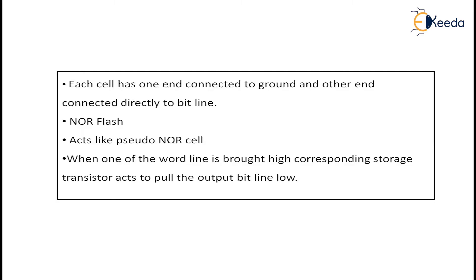In pseudo NOR, by default there will be a logic 1. We program such that a 0 is being written. When one of the word lines is brought high, the corresponding storage transistor will act to pull the output bit low — that is a pseudo NOR. When one of my word lines is brought high, that high is given to the NMOSFET, and thereby the pre-charged value goes low because I am pulling down that particular node. So my NOR flash performs like a pseudo NOR cell.